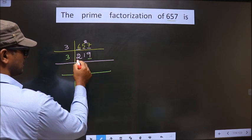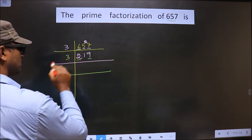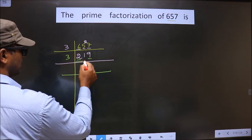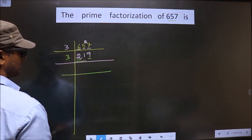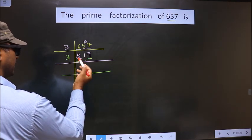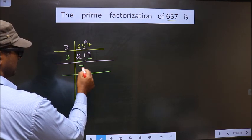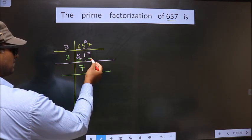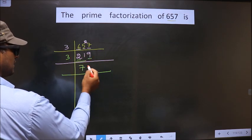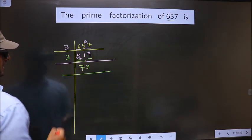Now, first number is 2. 2 is smaller than 3, so we take two numbers, that is 21. So when do we get 21 in the 3 table? 3 times 7 is 21. Next number is 9. When do we get 9 in the 3 table? 3 times 3 is 9.